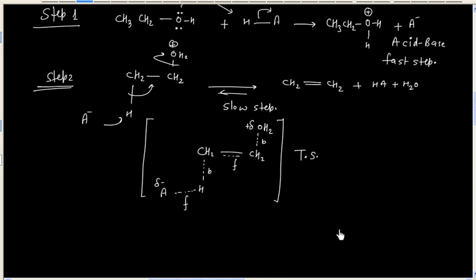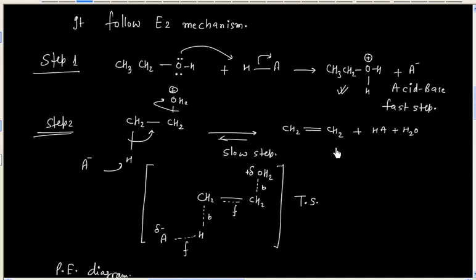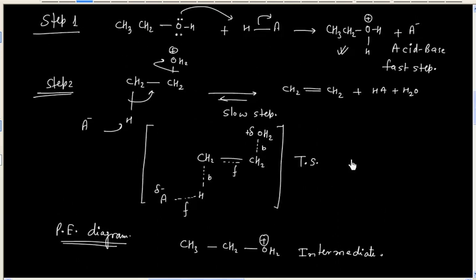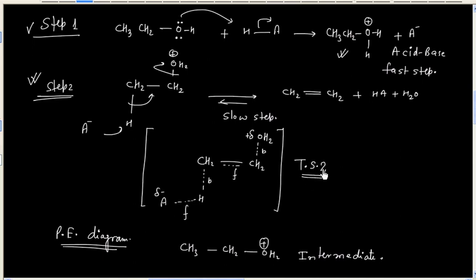We can now draw the potential energy diagram. This reaction has an intermediate, so we will have two transition states — one corresponding to step one and another corresponding to step two. This is transition state 2, and this is transition state 1.